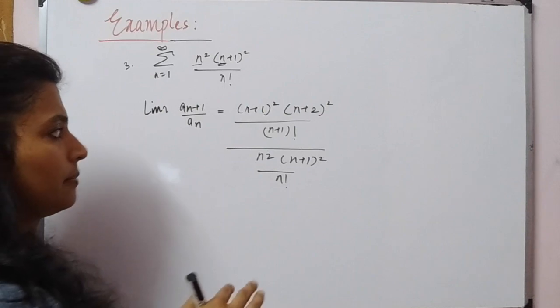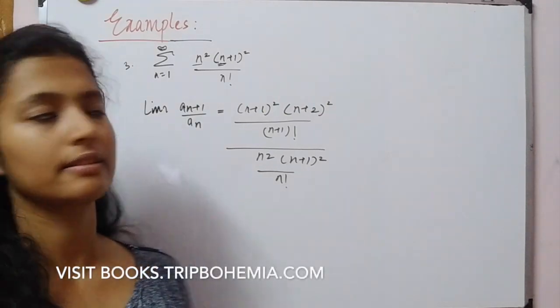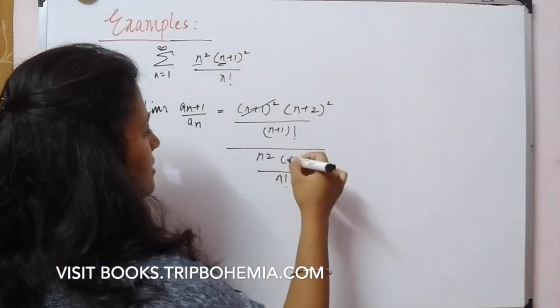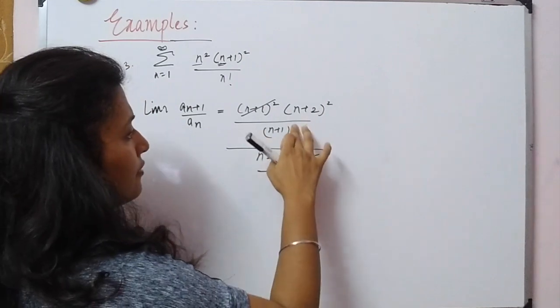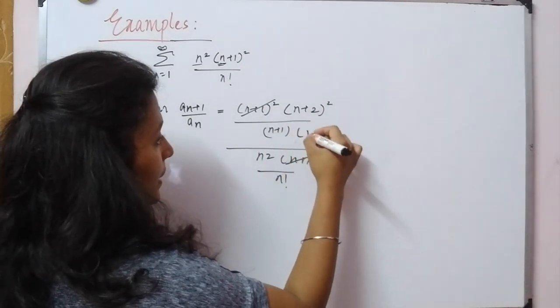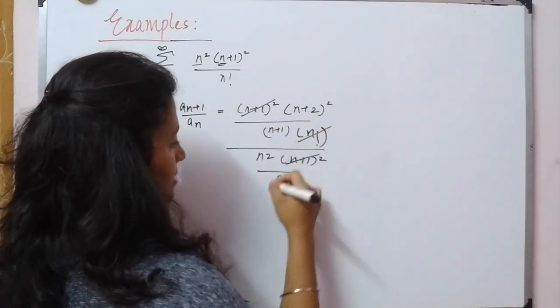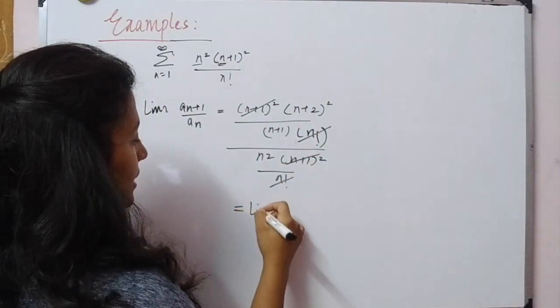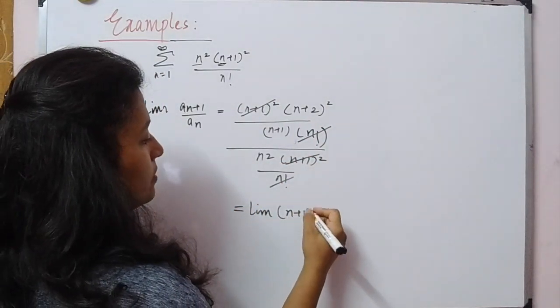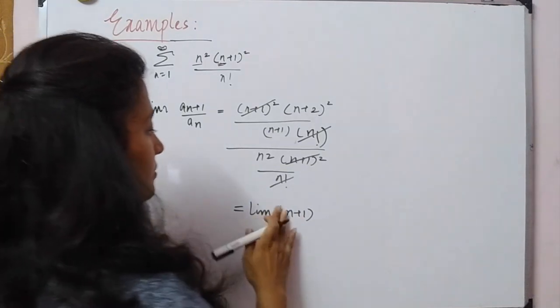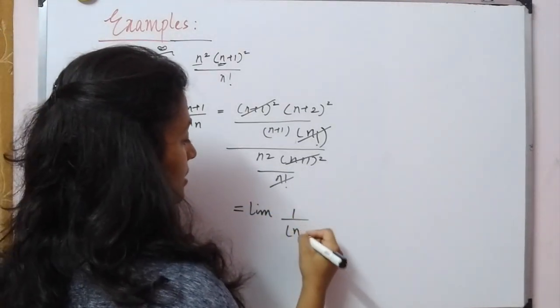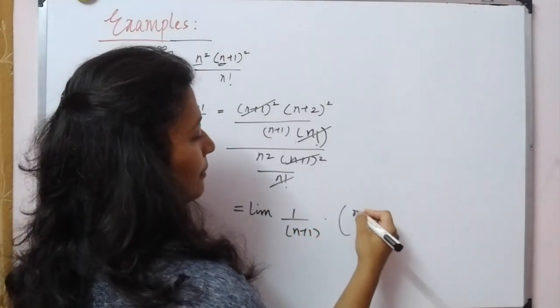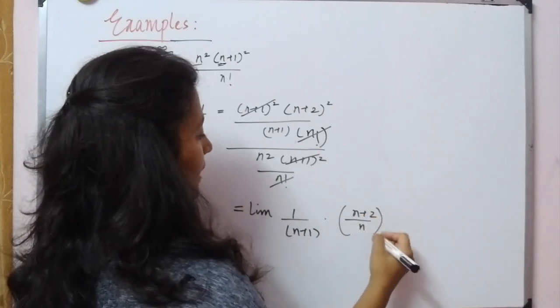Now we have to reduce this term so we can find the limit easier. (n+1)! can be written as (n+1)·n!, so n! cancels. What we're left with is lim 1/((n+1)(n+2)/n²).